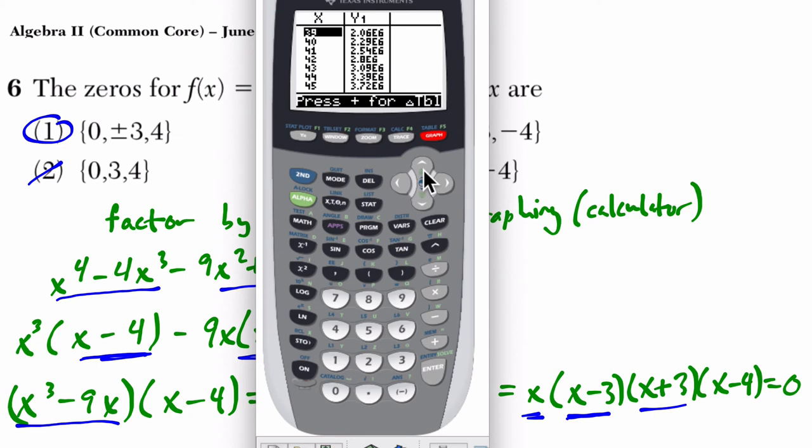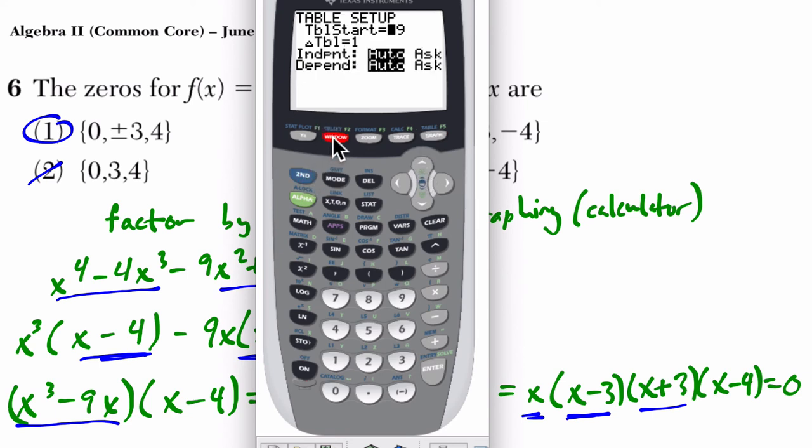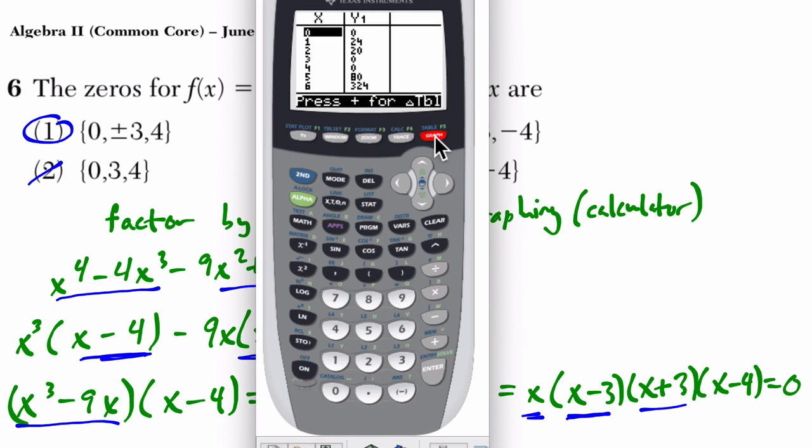So here, okay, I'm pretty far in the table, so let's just go to second window. It'll give me table set. I don't want to start at 39. Let me start at zero. And then I go back to the table. Okay, so you can see one of the zeros is at zero. Another is at three. Another is at four.